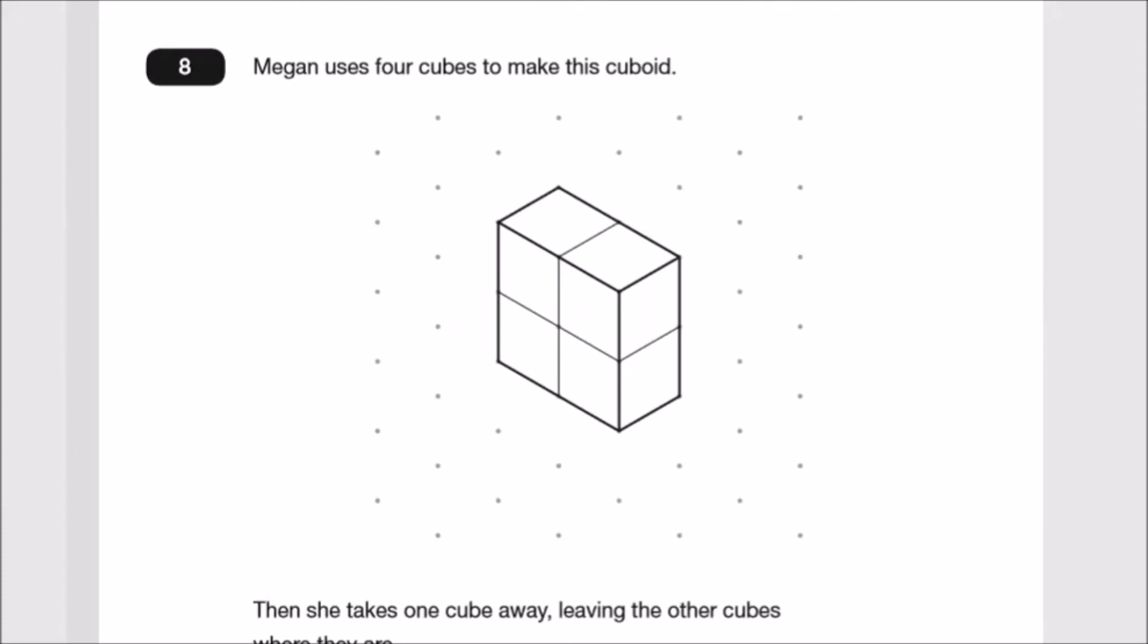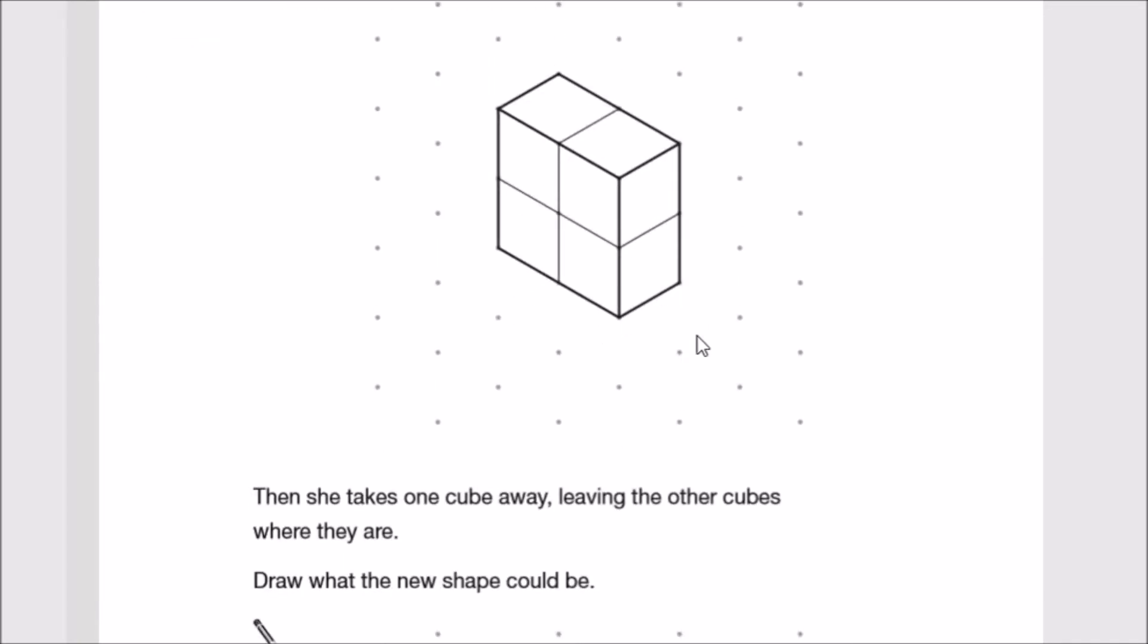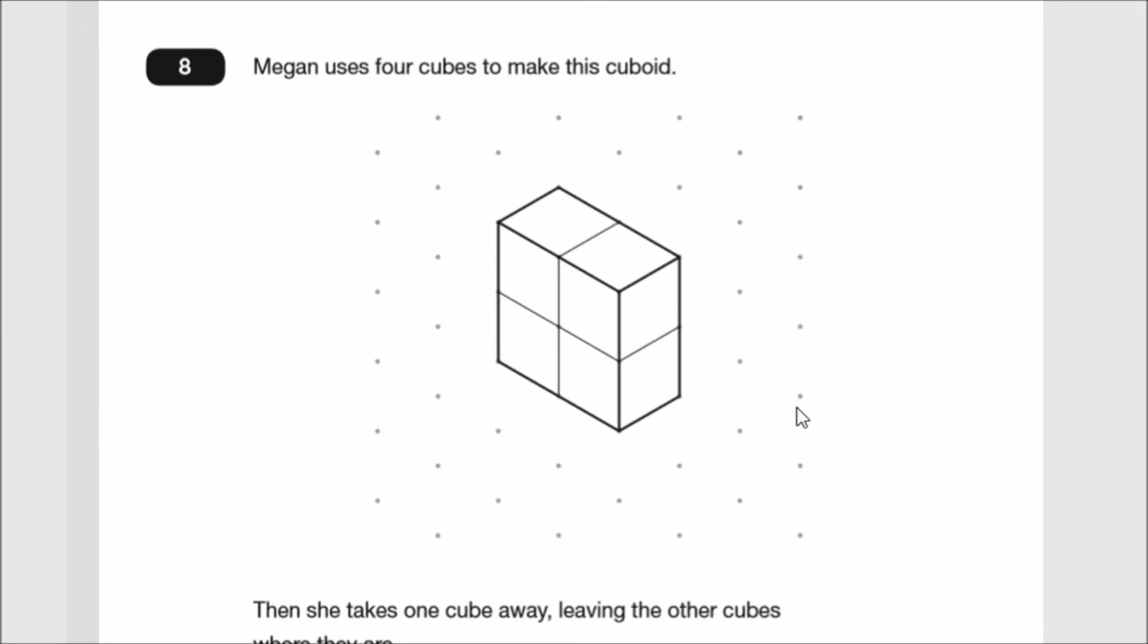Question eight: Megan uses four cubes to make this cuboid. Then she takes one cube away, leaving the other cubes where they are. Draw what the new shape could be. If we picture this and take away this cube, you should have an outline of the shape underneath. This would be the outline, and this shape would be extended here, so this would be the new shape that's been removed.